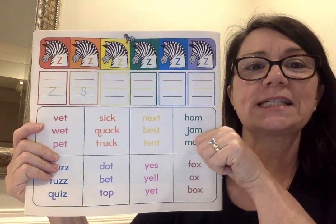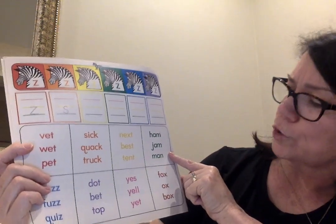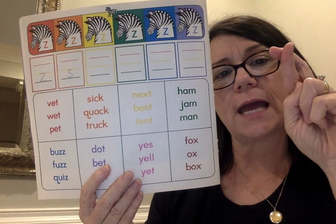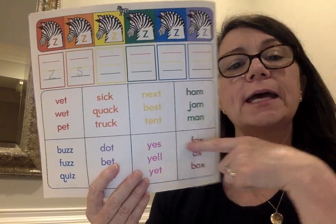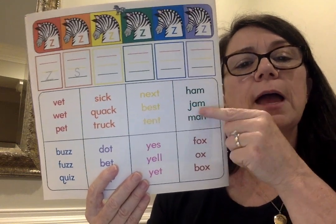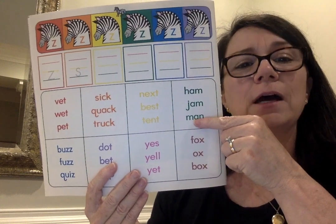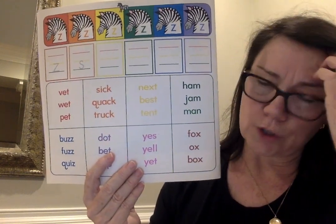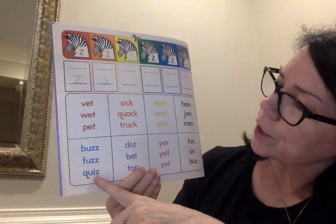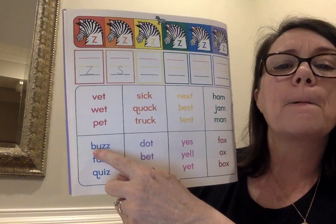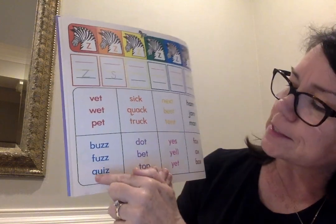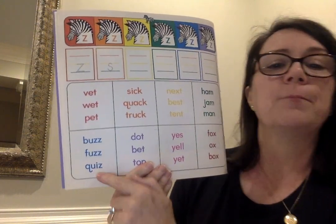Now we're moving over to our green words, and our words are ham, am, and and — you hear that welded sound? Am says am, and says and. So we've got ham, am, and and — welded sounds at the ends of those words. Read those words and circle the word ham.